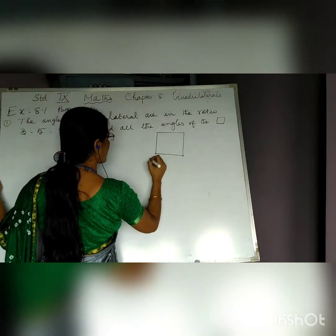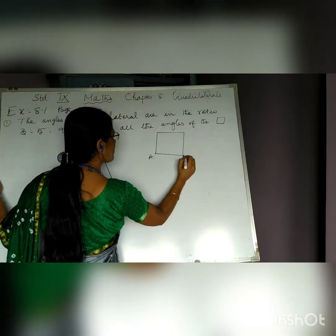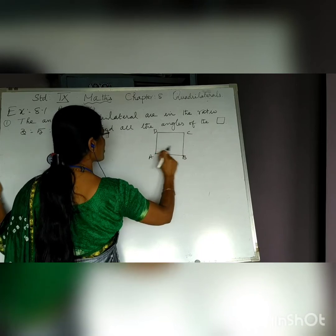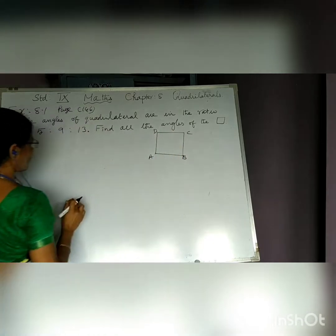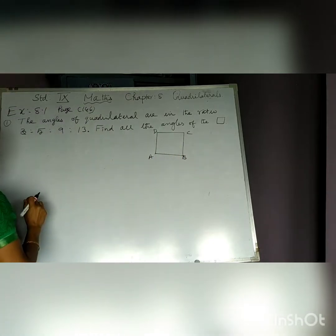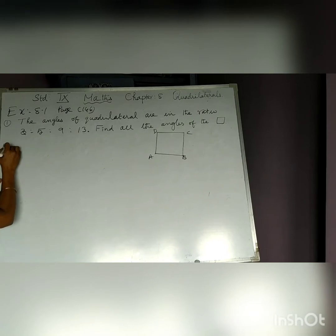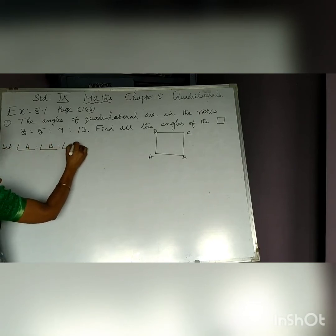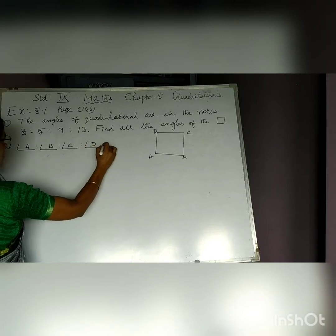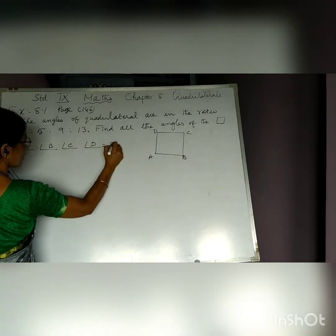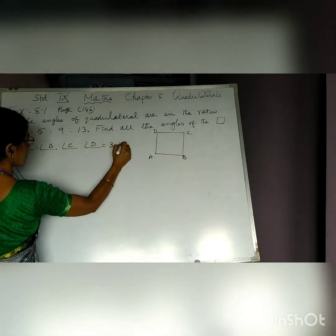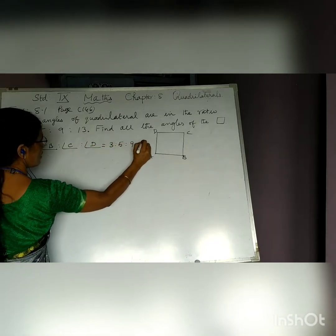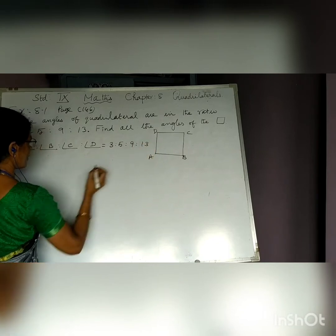Let us take the quadrilateral ABCD. The ratios of the angles are given and we are asked to find the measures of the angles. Let angle A : angle B : angle C : angle D = 3 : 5 : 9 : 13.